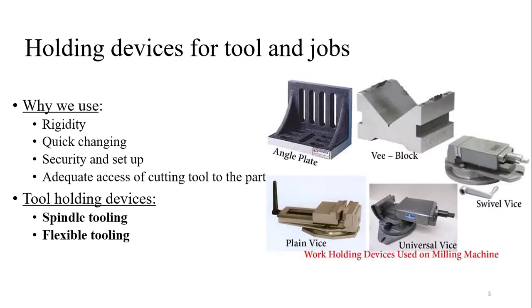Starting with the tools, you might have seen in this image the kind of holding devices used in simple or conventional machines, whether it is a lathe machine or a milling machine. But why are we using these? There are four major reasons that we use these special kind of holding devices. First of all is rigidity — meaning whatever forces are applied, the device should remain rigid and should not displace from its location.